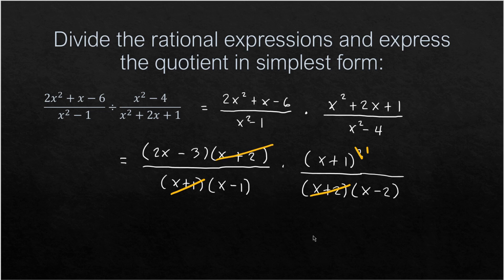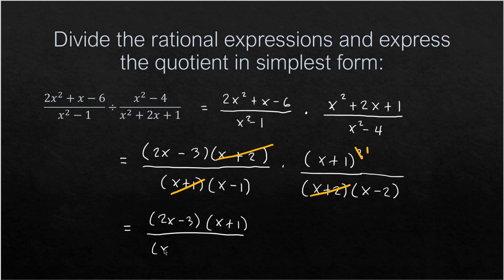After cancellation, the simplified form is (2X − 3) in the numerator and (X + 1) in the numerator from the remaining (X+1) factor, all over (X − 1)(X − 2). That is the simplified form of the given rational expression.